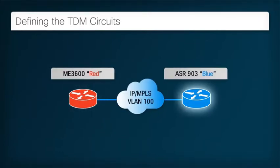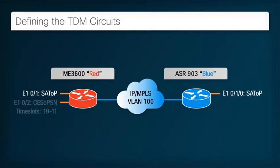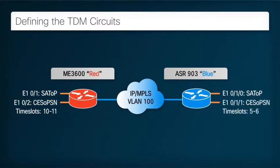One is unstructured while the other is structured, so we'll extract time slots and carry these streams of the multiplex data in a pseudowire. The unstructured circuit is connected to E1-0-1 on Router Red, and the whole E1 is to be backhauled as an unframed pseudowire to E1-0-1-0 on Router Blue using SATOP. The other circuit comprises two time slots of circuit E1-0-2 on Router Red to E1-0-1 on Router Blue. Since we're only interested in the contents of two time slots, we use a CESoPSN pseudowire.